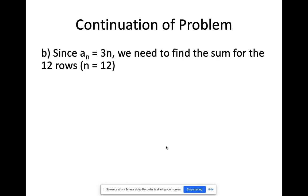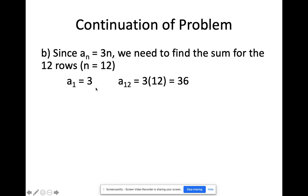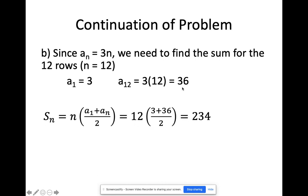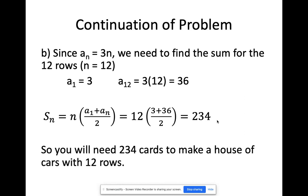Now, if we want to find the total number of cards for the first 12 rows, n equals 12. The first term is 3 and the 12th term is 36 cards. Using the sum formula: S of 12 equals 12 times (3 plus 36) divided by 2, which gives 234. So a 12-row house of cards requires 234 cards.